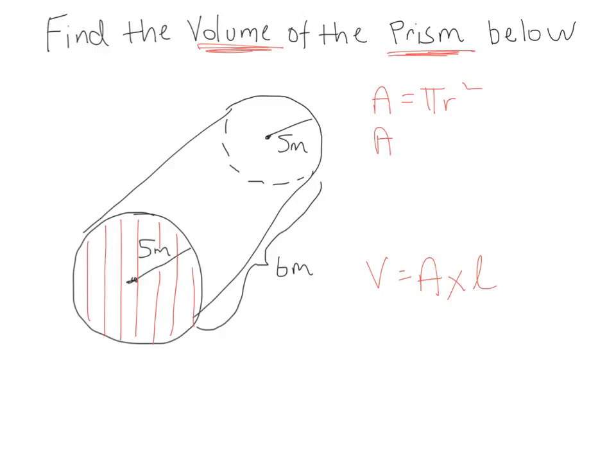The area of the end is a circle, so it's π times the radius squared. The radius is 5, and 5 squared is 25. So the area of the end is 25π meters squared.